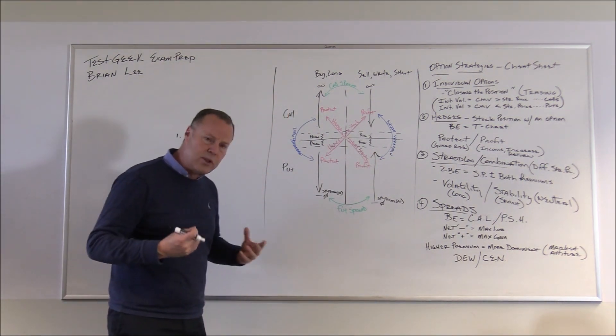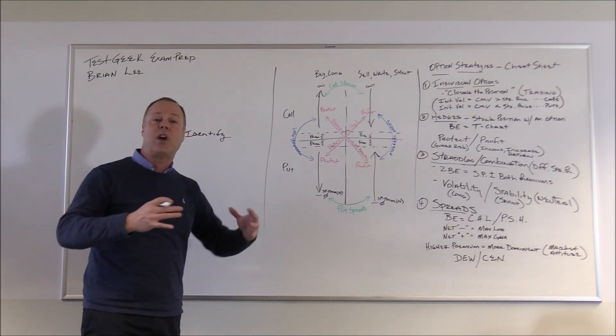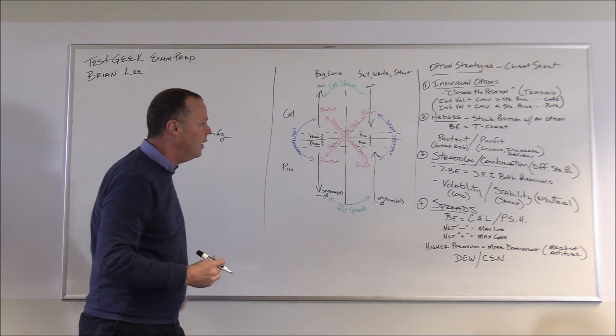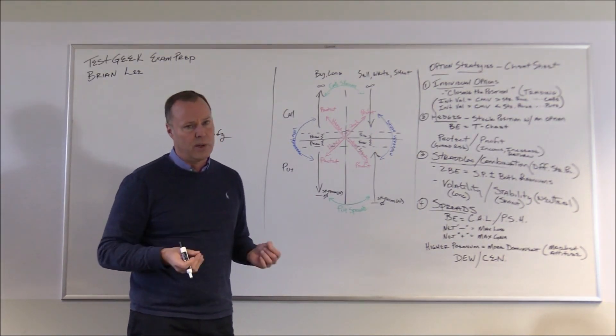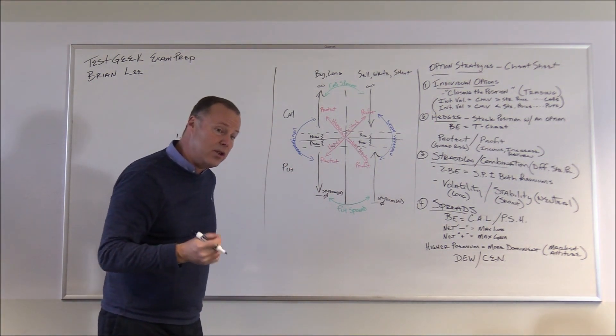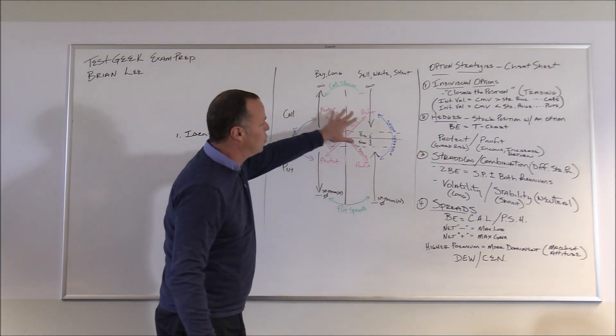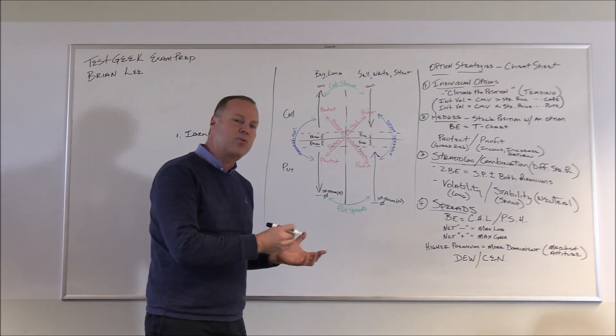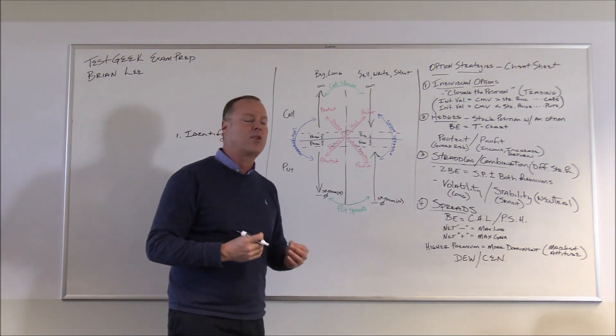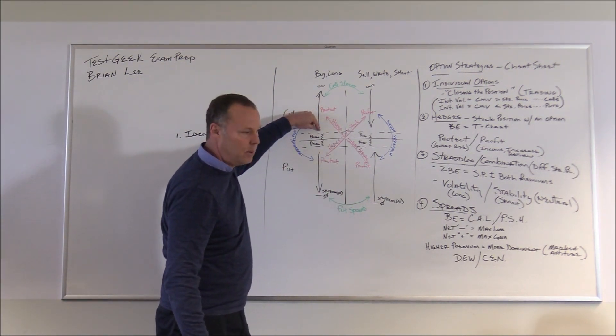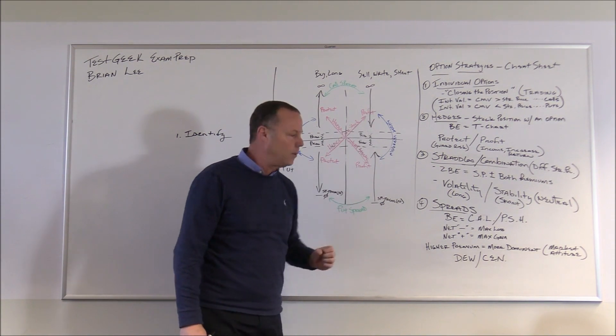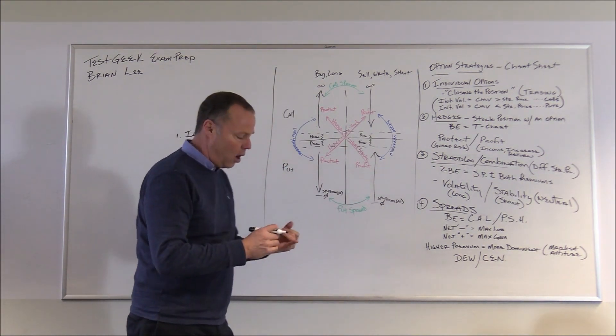When you go through the Series 7 exam and come across an option question, it's often a paragraph-long question that you see. So the first thing you have to do is determine which of the option strategies it is. They each have their own specific characteristics. The options aerobics diagram illustrates each one of those strategies that you may see. For example, the individual options, those are the ones in black, are simply trading the options, buying and selling the call or put option. They might have very fundamental questions on those: maximum gains, maximum losses, break-evens, or trading the option position.